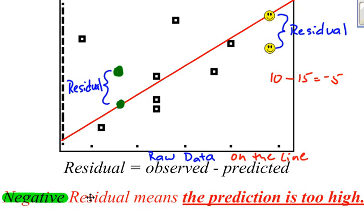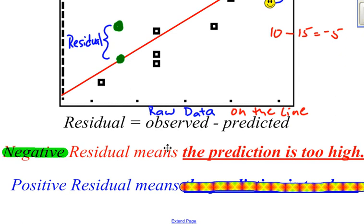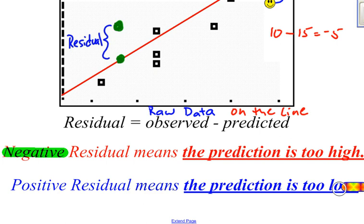So a negative residual means that the predicted value is too high. In contrast, if we have a positive residual, that means that the prediction is too low.